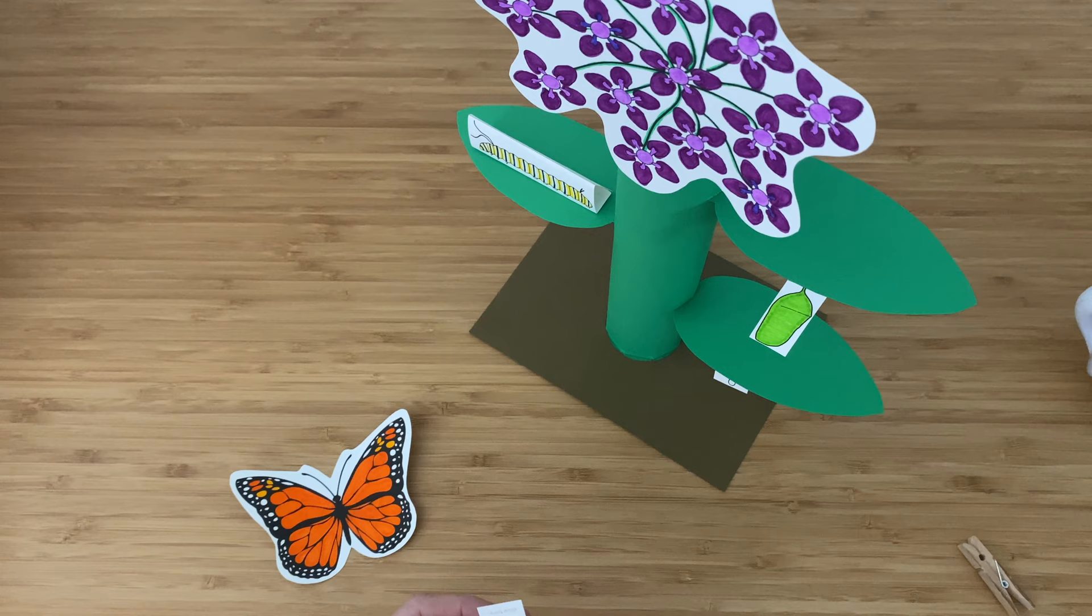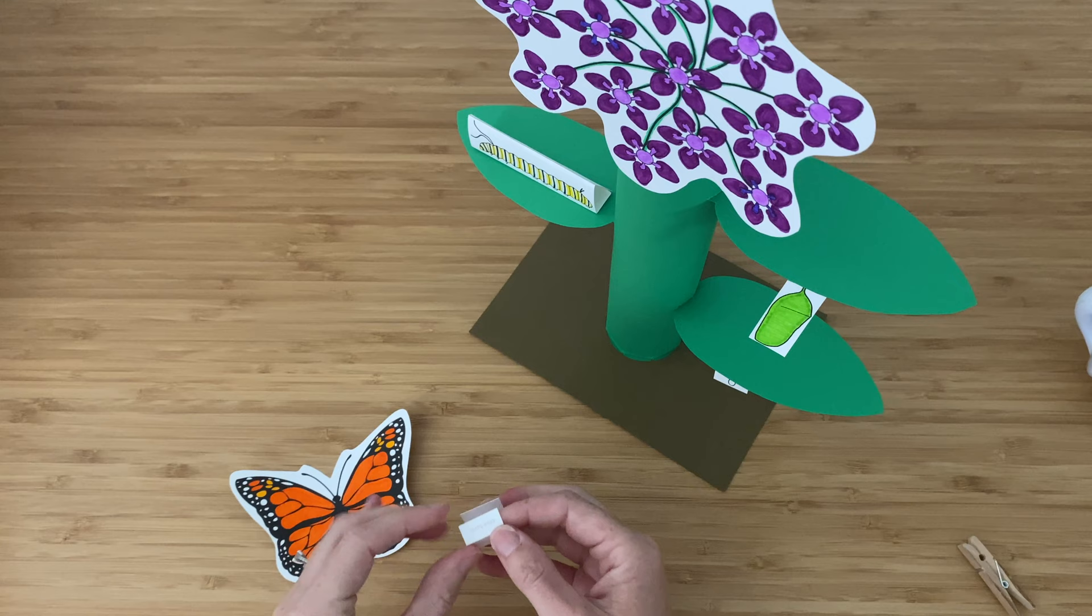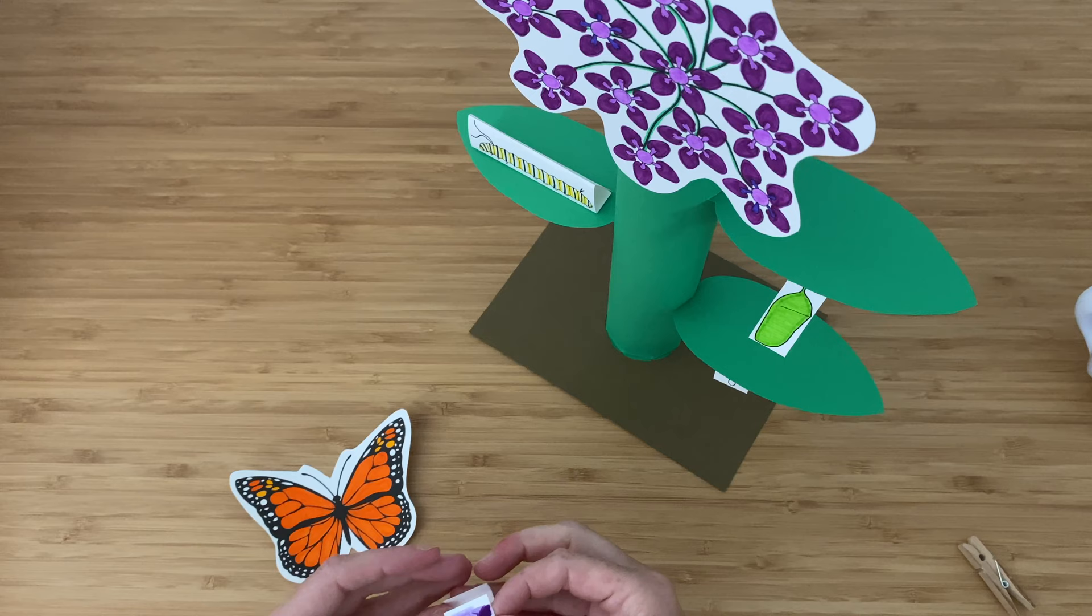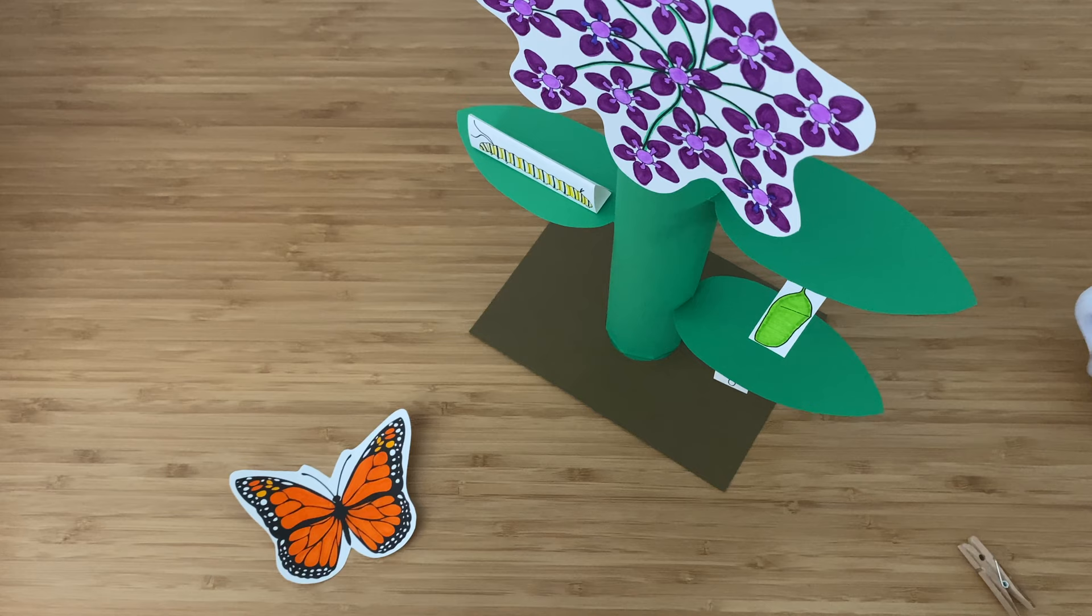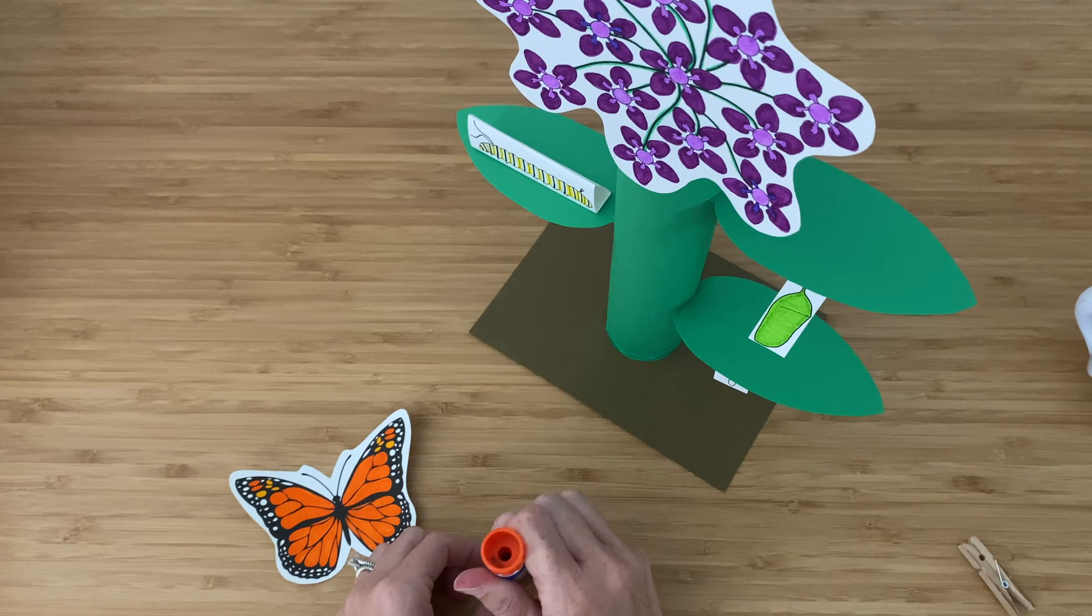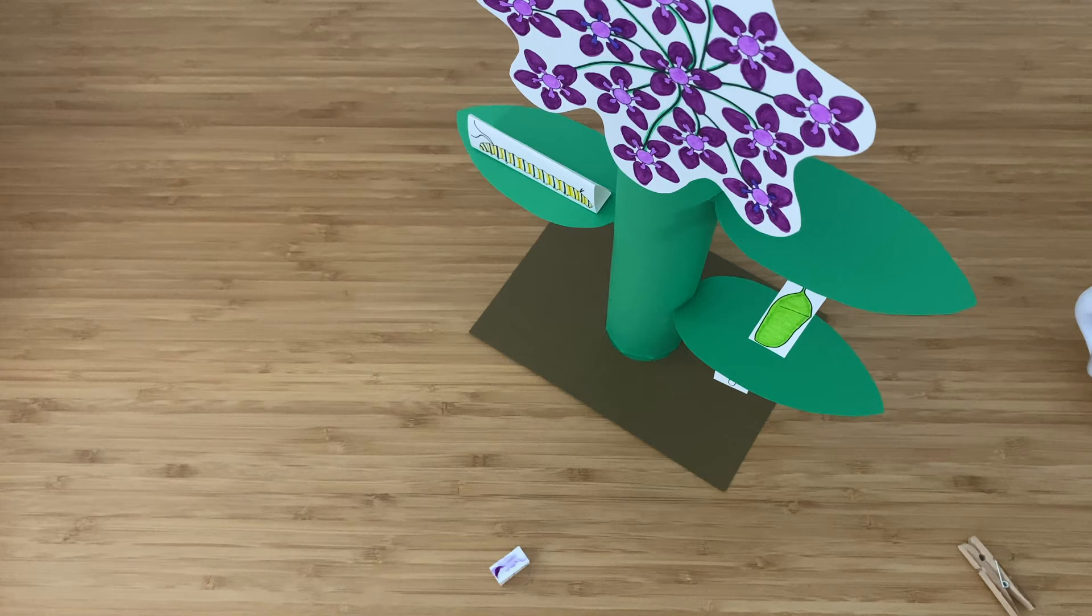And now for my adult, the butterfly. Again, we're going to fold backwards on each of those gray dotted lines. And this time, when you glue it together, you're going to be making more of a rectangular shape like this. Now if you want to skip the butterfly legs, that's fine. It'll work fine without it. But I'm going to put glue on the legs and stick them on the butterfly.